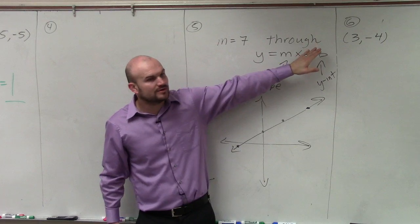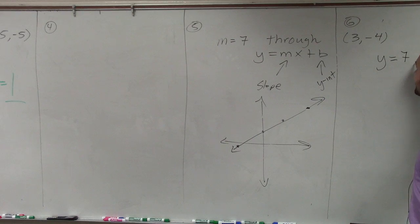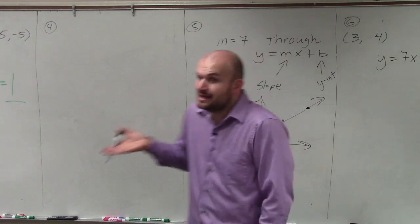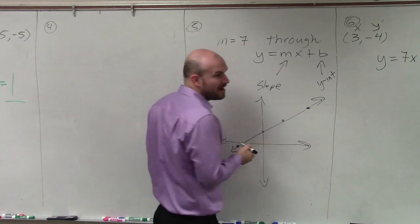So what we're going to do is we're going to first input in our slope, which in this case is 7. And now what we need to do is we need to find the y-intercept. This is just a coordinate point, just an x and y point on the graph.